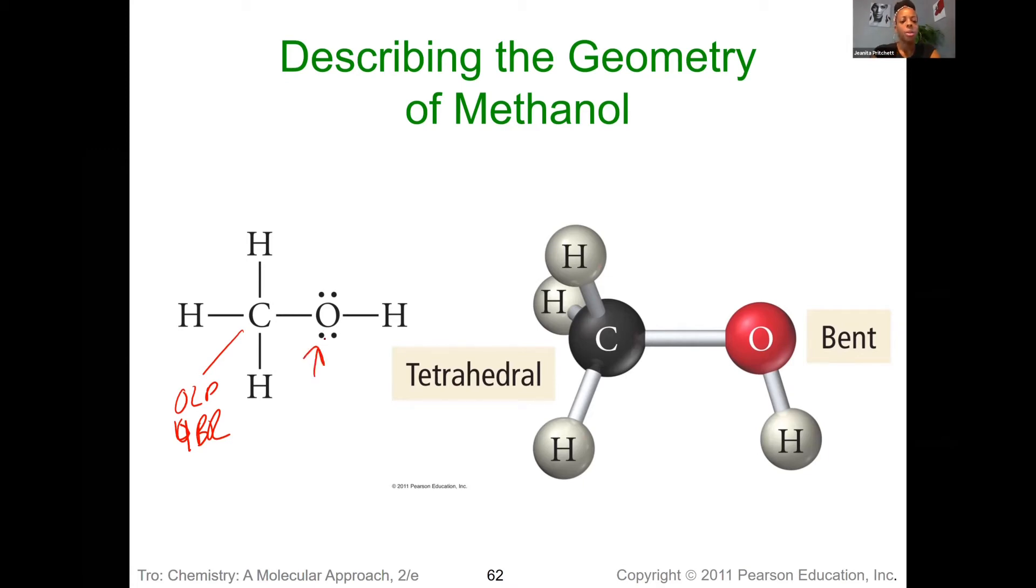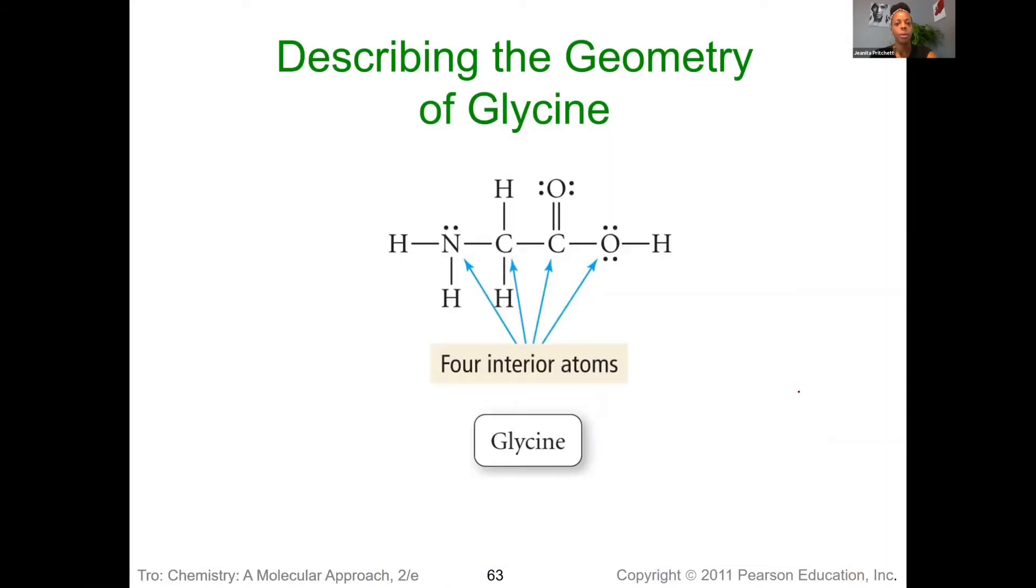For the oxygen, we would have two lone pairs, two bonding regions. So that means the electron geometry is also tetrahedral, but the molecular shape of the molecule will now be that bent shape, because that's the portion that remains once we draw it without the lone pairs.